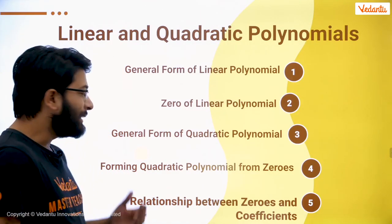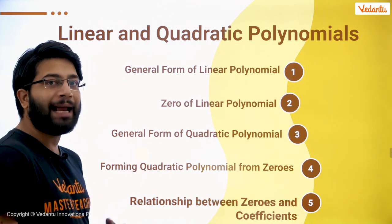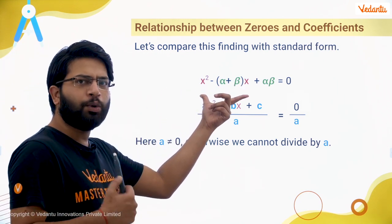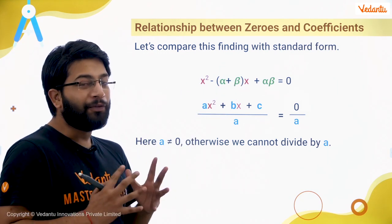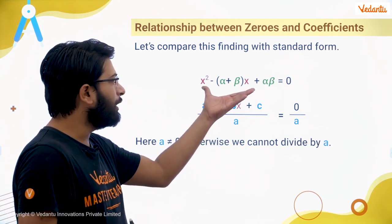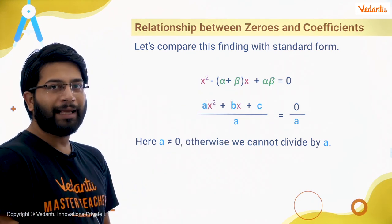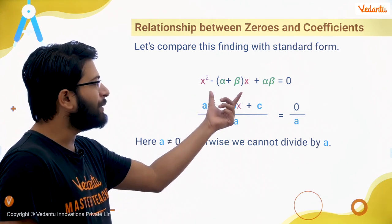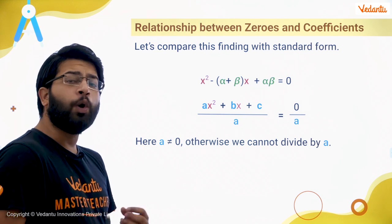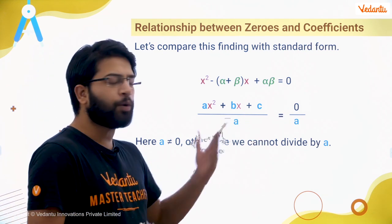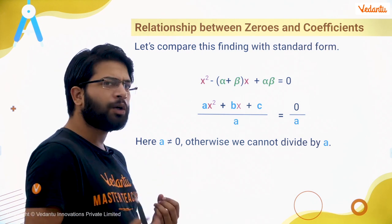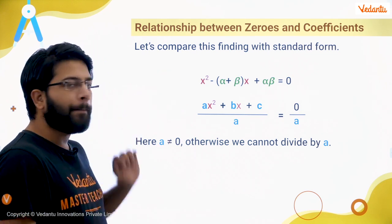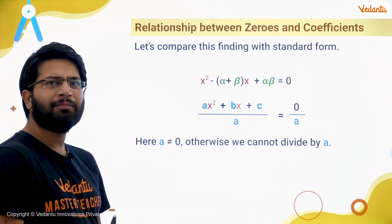Now let's see, Champ, what is the relationship between the zeros and the coefficients. We have seen that if we know the zeros of the quadratic polynomial, we can write the quadratic polynomial very easily. We also know that the general form of the quadratic polynomial is ax square plus bx plus c. And the general form of the quadratic equation is ax square plus bx plus c equal to zero. I want to compare these two equations in order to get the relationship.